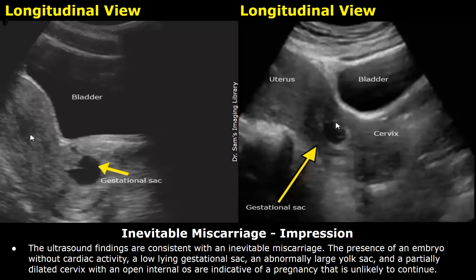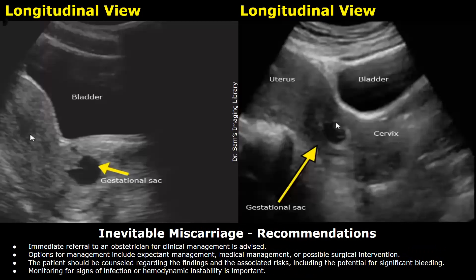Here is the impression: the ultrasound findings are consistent with an inevitable miscarriage. The presence of an embryo without cardiac activity, a low-lying gestational sac, an abnormally large yolk sac, and a partially dilated cervix with an open internal os are indicative of a pregnancy that is unlikely to continue. Recommendations: immediate referral to an obstetrician for clinical management is advised; options include expectant management, medical management, or possible surgical intervention; the patient should be counseled regarding the findings and associated risks including the potential for significant bleeding; monitoring for signs of infection or hemodynamic instability is important.